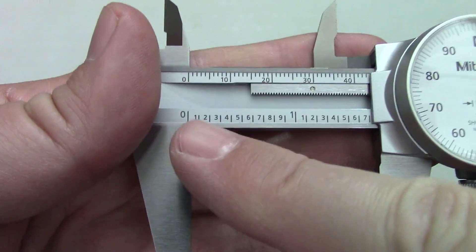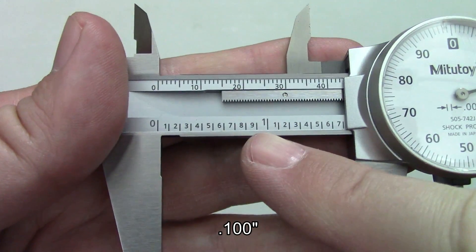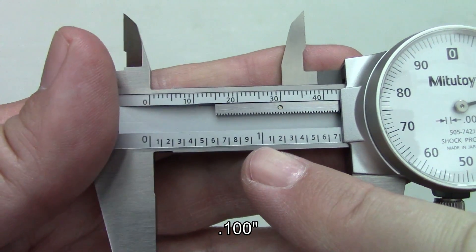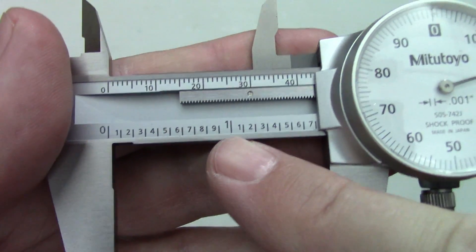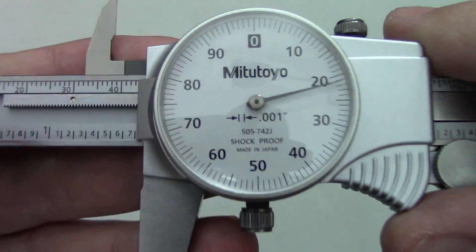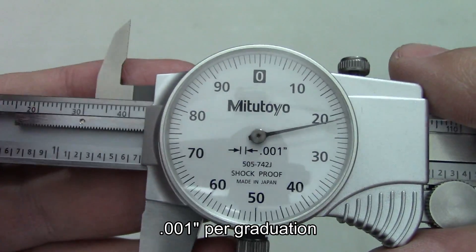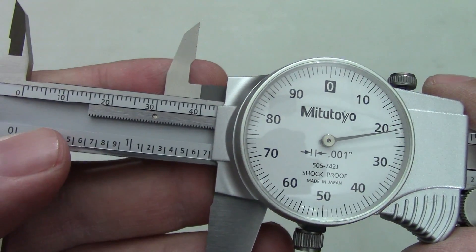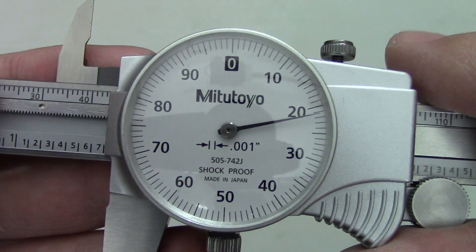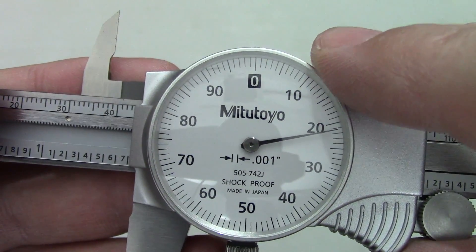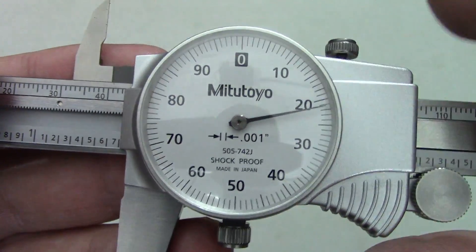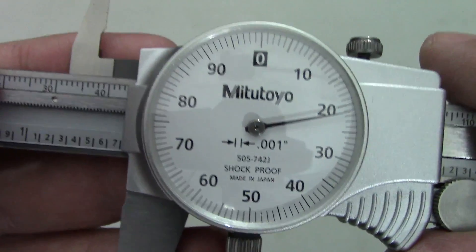For the inch calipers, the beam is marked every one hundred thousandths of an inch and every inch has a larger graduation and number. The dial is graduated in thousandths of an inch and one full revolution of the needle equals the one hundred thousandths that we see on the beam. The dial also has larger graduations for every five thousandths of an inch and every ten thousandths of an inch is numbered to help with the reading.